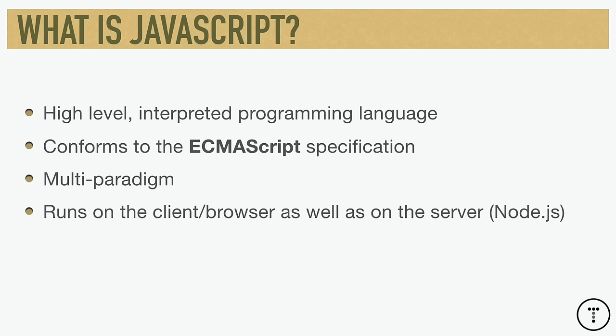I first want to talk about what JavaScript actually is. If you're brand new, some of what I'm about to say might sound confusing, but you don't really need to understand all this right now in order to start learning how to write JavaScript. JavaScript is a high-level interpreted language. High-level means there's a lot of abstraction — you don't have to deal with things like memory management, like you would with a low-level language such as C or C++.